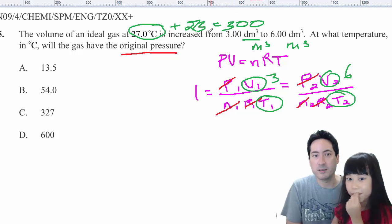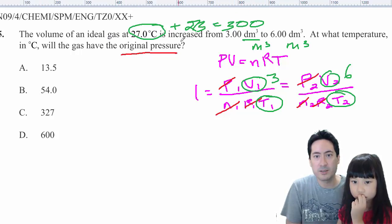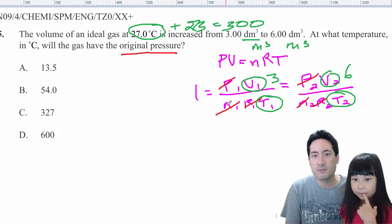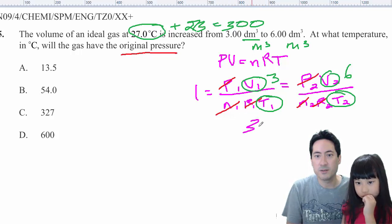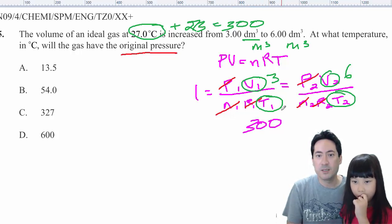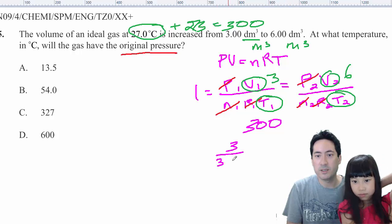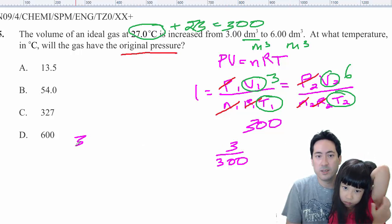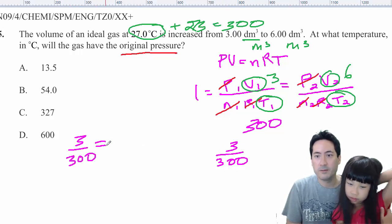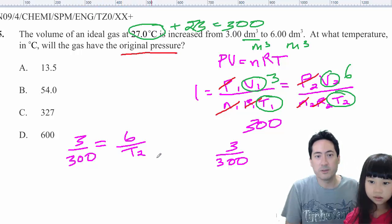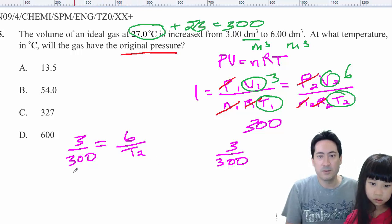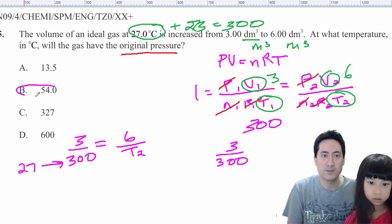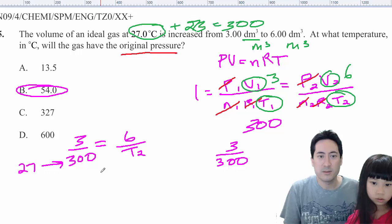So, let's go back to the pink. The volume of ideal gas is increased from 3 to 6. So, it's originally at 27, or 300. So, we have 3 on 300 equals 6 on the temperature that we're looking for. Right? Now, if you forget to transfer that to 27, if you forget to move that to 27, you're going to end up getting 54. IB's good at tricking you. Alright?